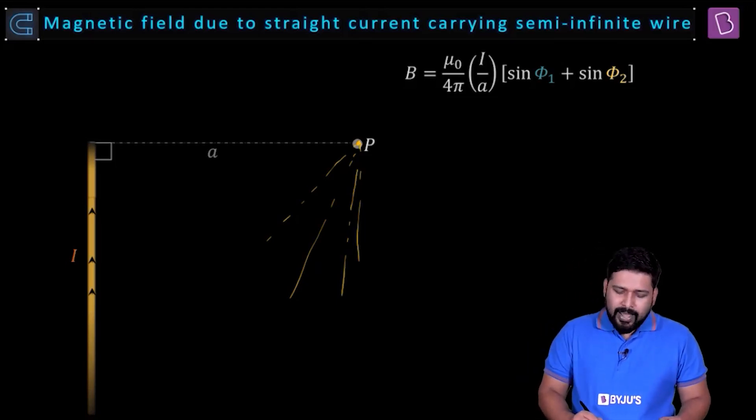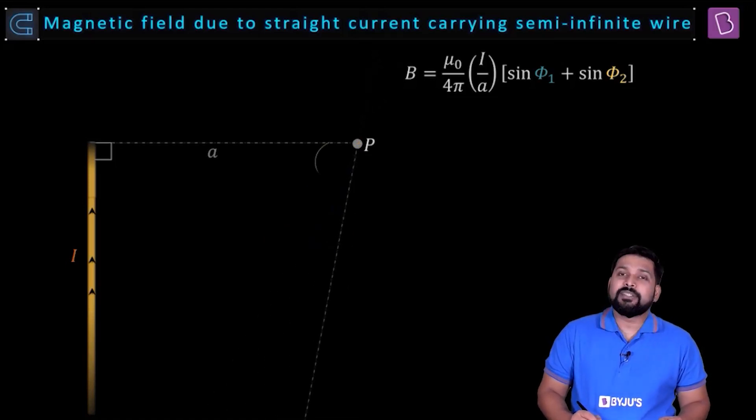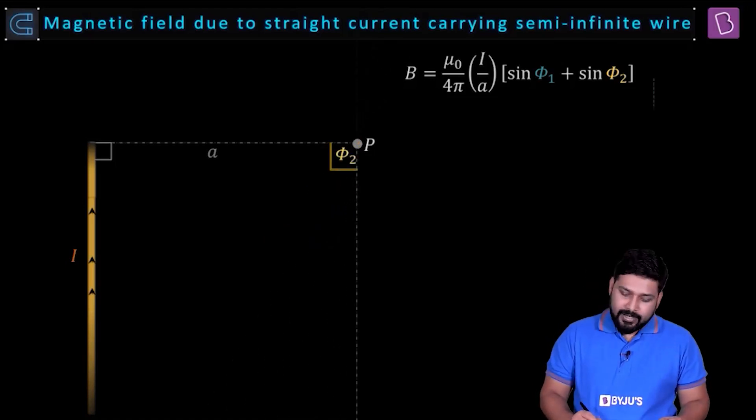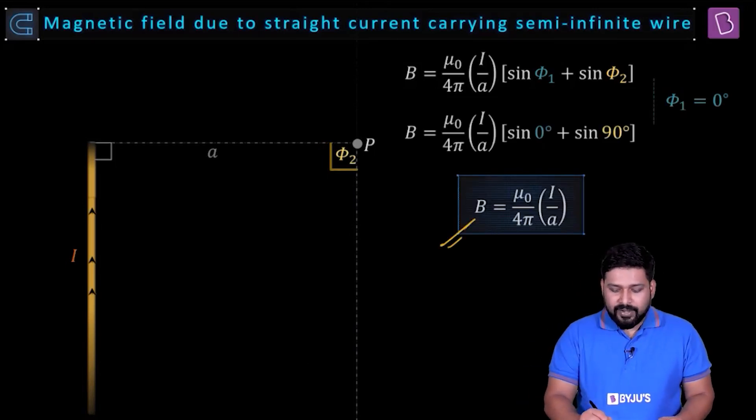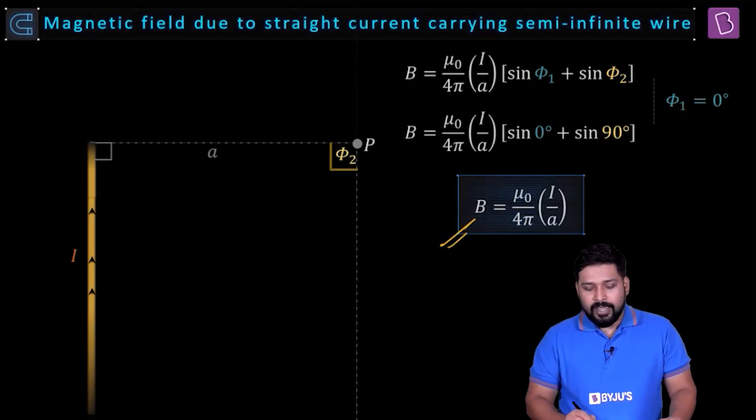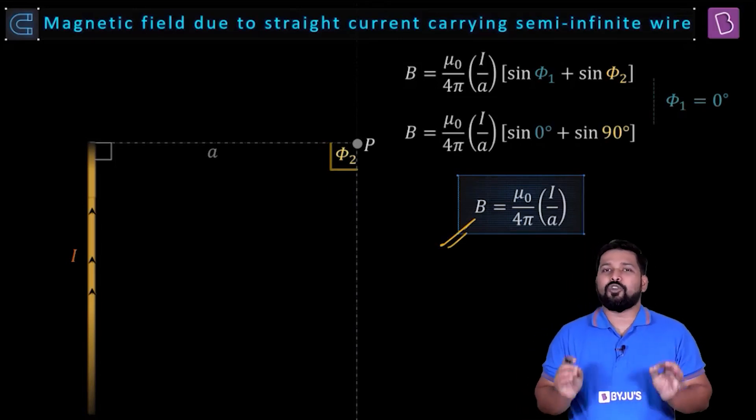So one angle becomes equal to 0, another one becomes equal to 90. Well, sin 0 is 0 and sin 90 is equal to 1. And that gives us for a semi-infinite wire near one of its end, we get B is equal to μ₀ by 4π, I divided by a. So remember these results.